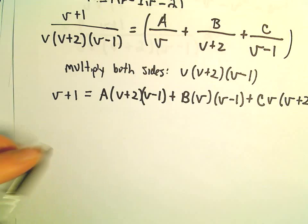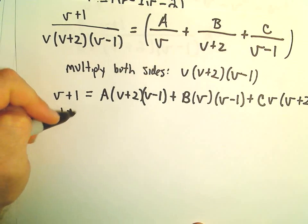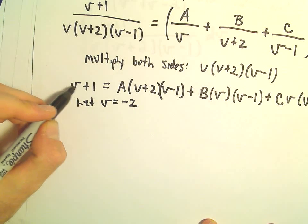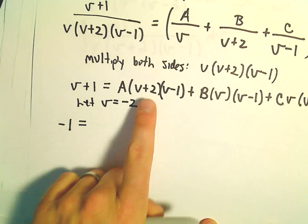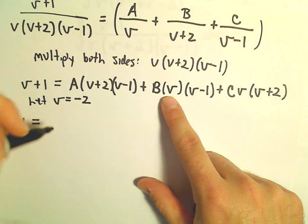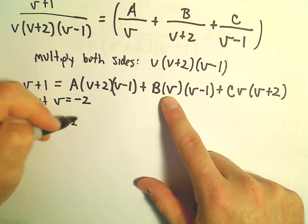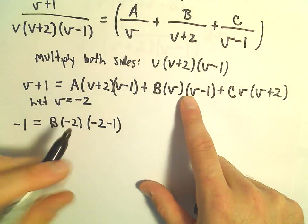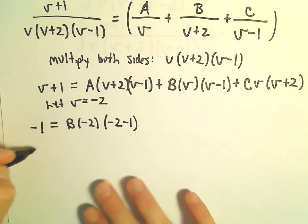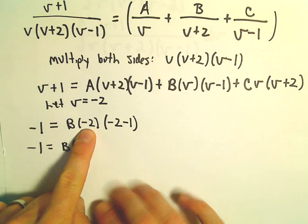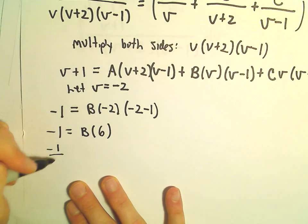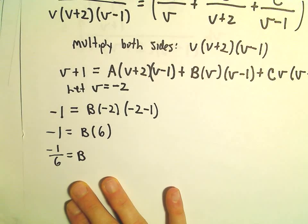I'm going to pick strategic values for v. If v = -2: the left side gives -2 + 1 = -1. The first and third terms vanish, leaving B·(-2)·(-3) = 6B. So -1 = 6B, giving b = -1/6.